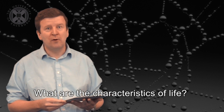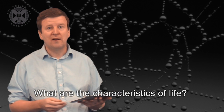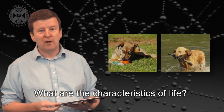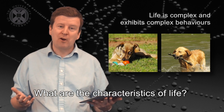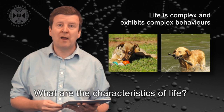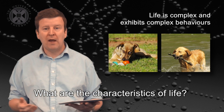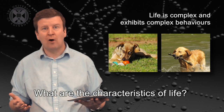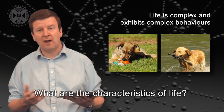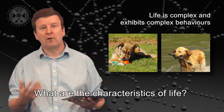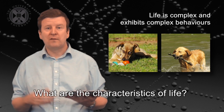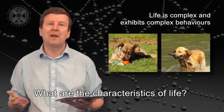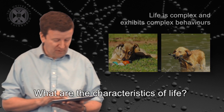Let's have a look at some of the characteristics that we might think define living things. If you look at pet dogs, they seem to be very complex and exhibit complex behaviours. We might look at the way a dog greets us and say that sort of complexity is indicative of life — non-life doesn't exhibit the same sort of complexity as life does.